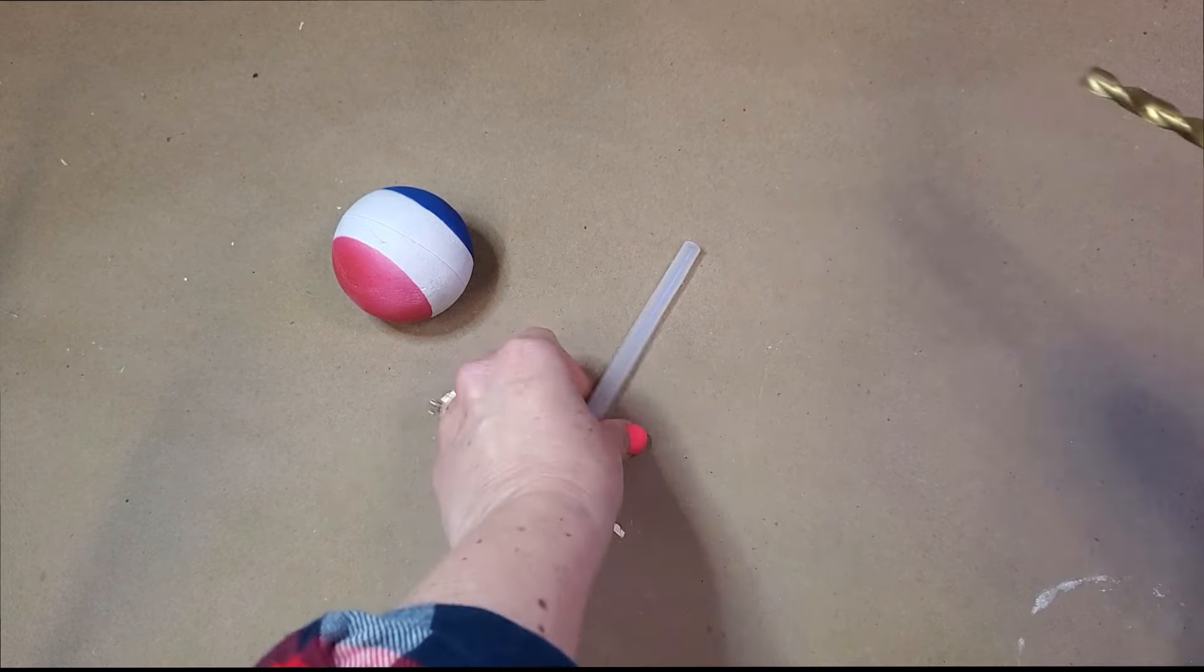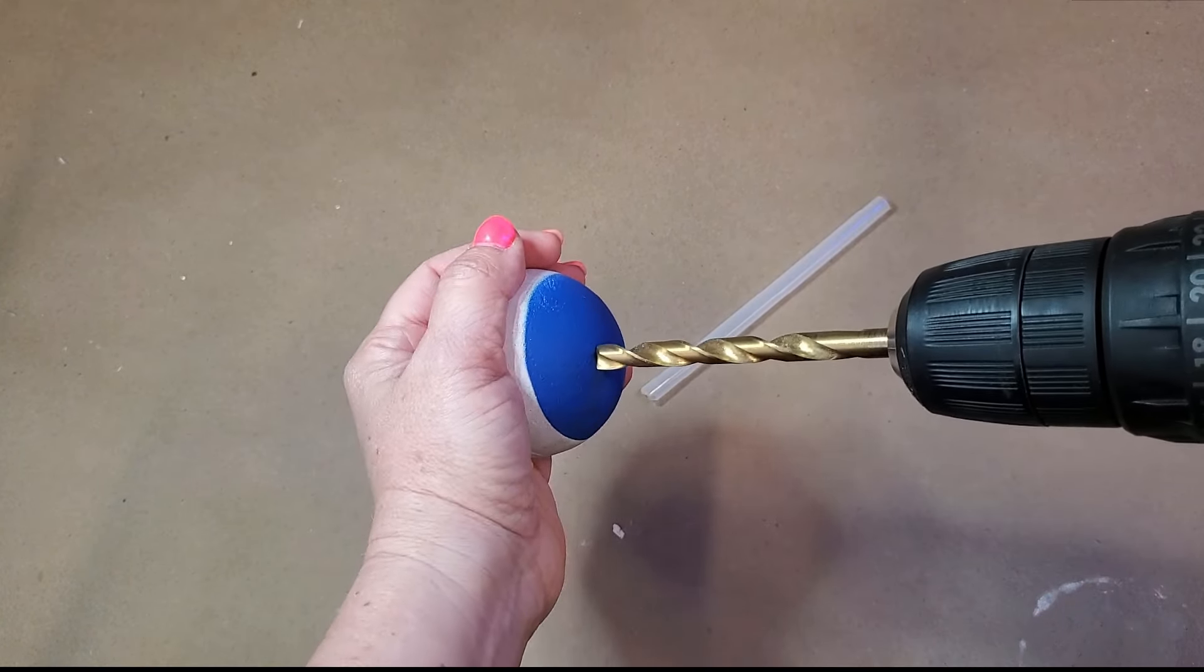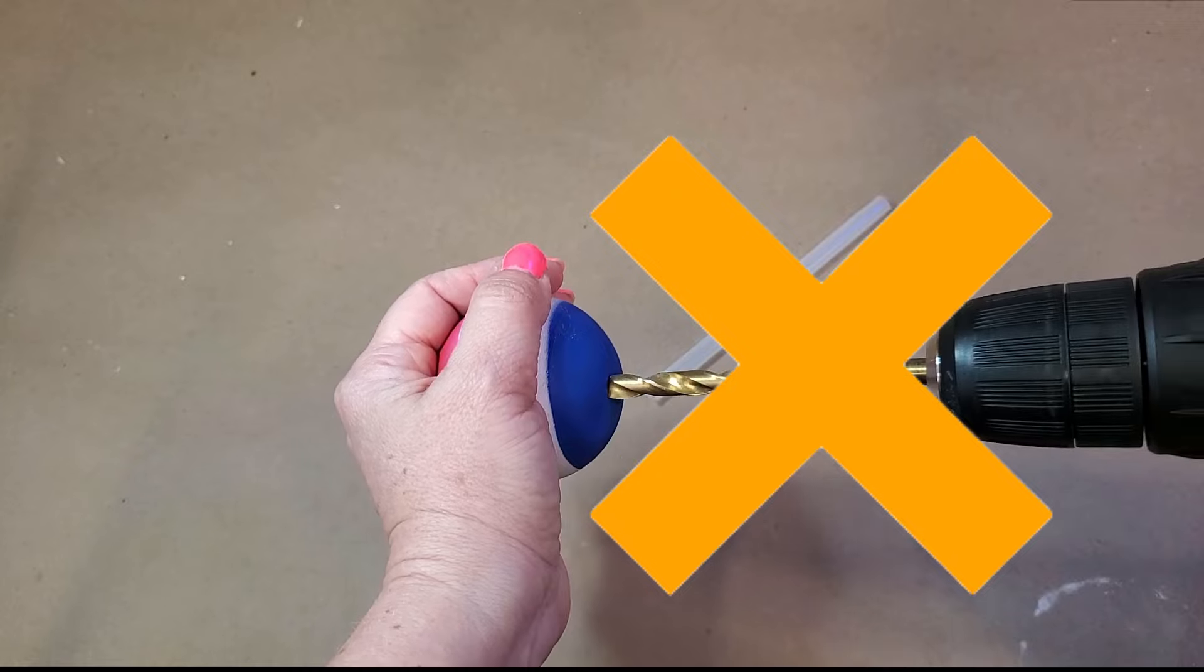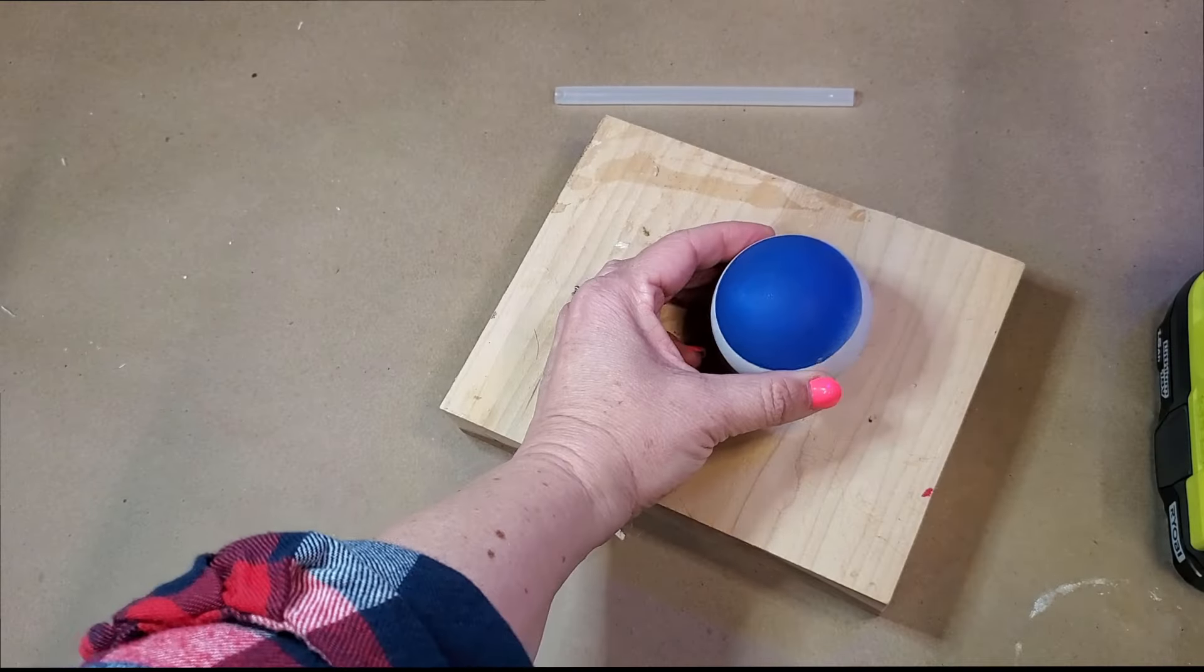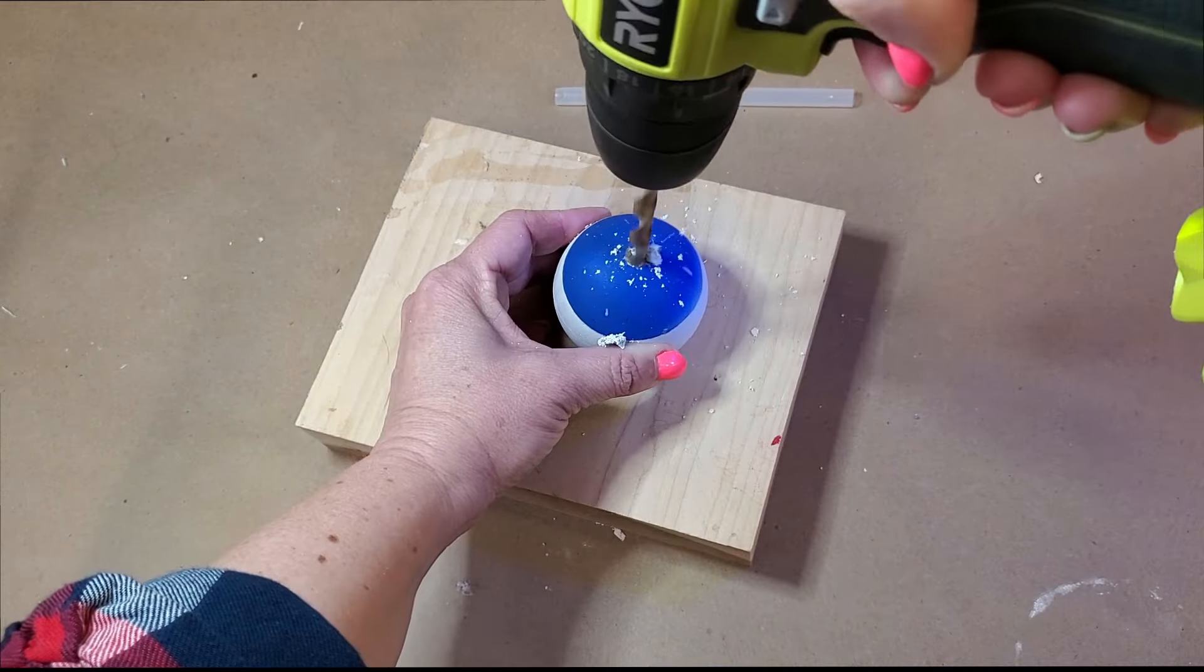We're going to find a drill bit just a hair smaller than our tubing and chuck it up. Make sure you're not holding the ball like a doofus. We want a hole in the ball, not our hands. Set up a safe work holding situation and drill a hole right through the center of the ball.